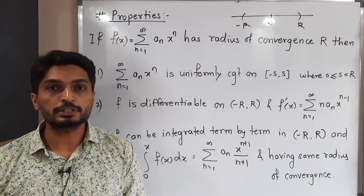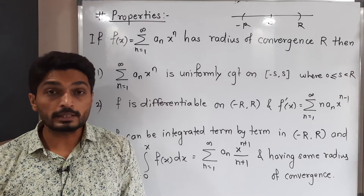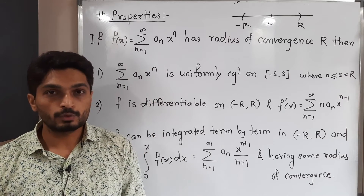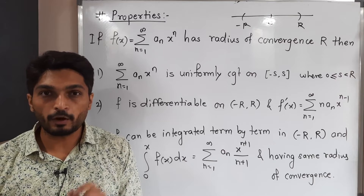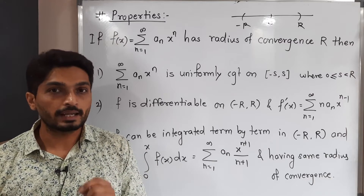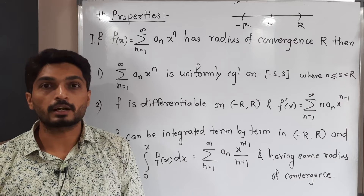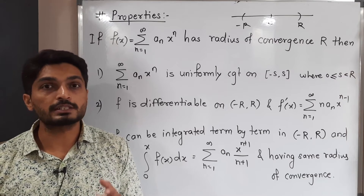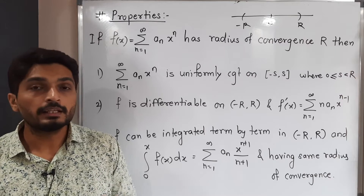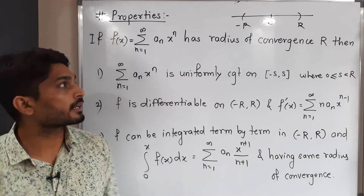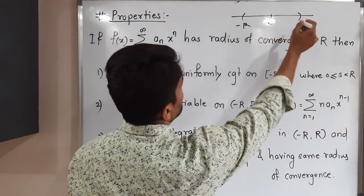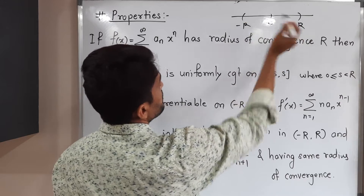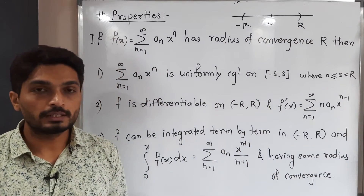Let us discuss a few interesting properties of power series. Consider a power series f(x) = summation of a_n times x raised to n. Normally in a power series we have (x minus p) raised to n, but here we simply have x raised to n, so this is a power series around x = 0. Consider this power series with radius of convergence R. The interval of convergence will be (-R, R), as shown in the diagram.